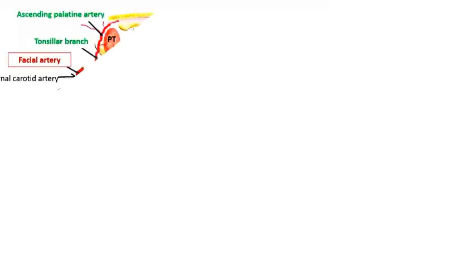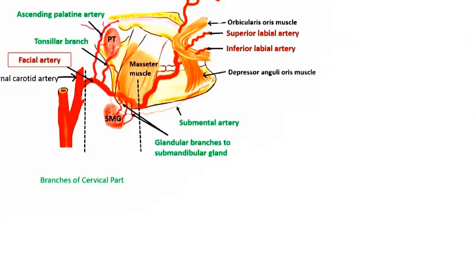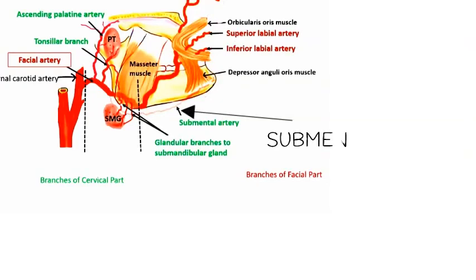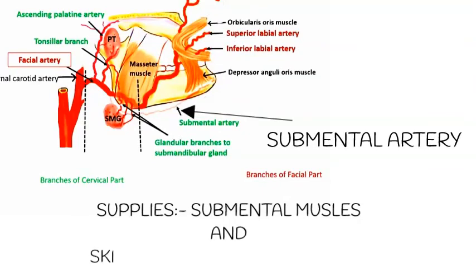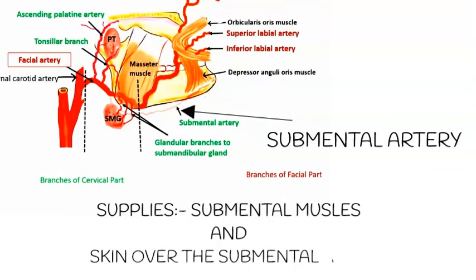The submental artery runs on the inferior aspect of the chin and is the largest of the cervical branches of the facial artery. This branch is given off just as the facial artery passes through the submandibular gland. It supplies the muscles surrounding this region and the skin over the submental area.